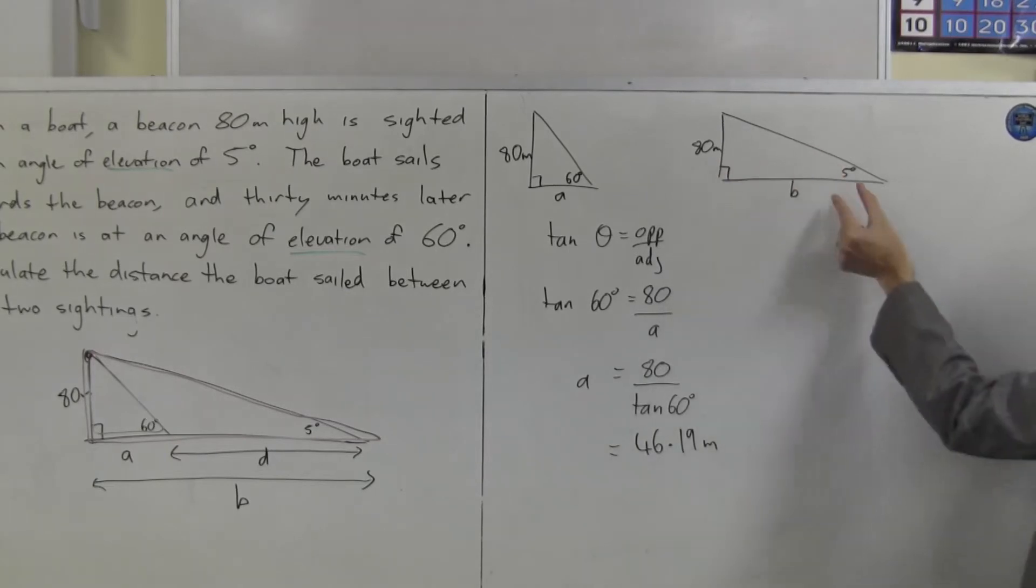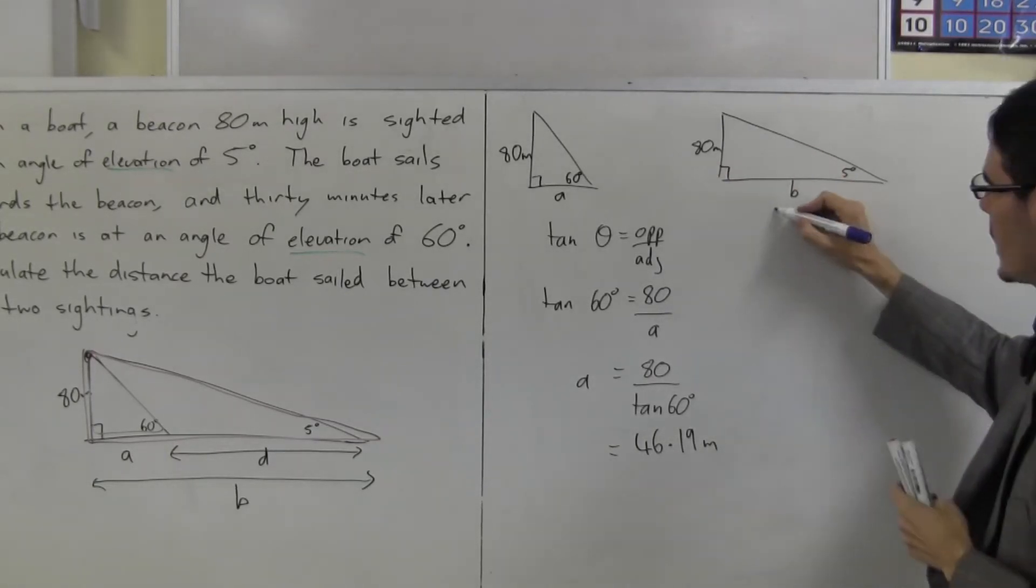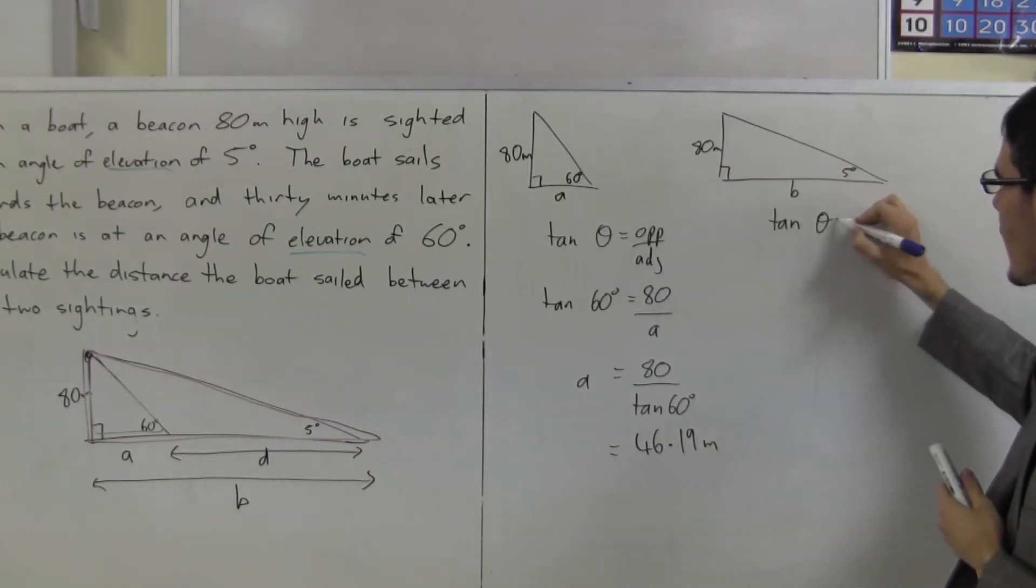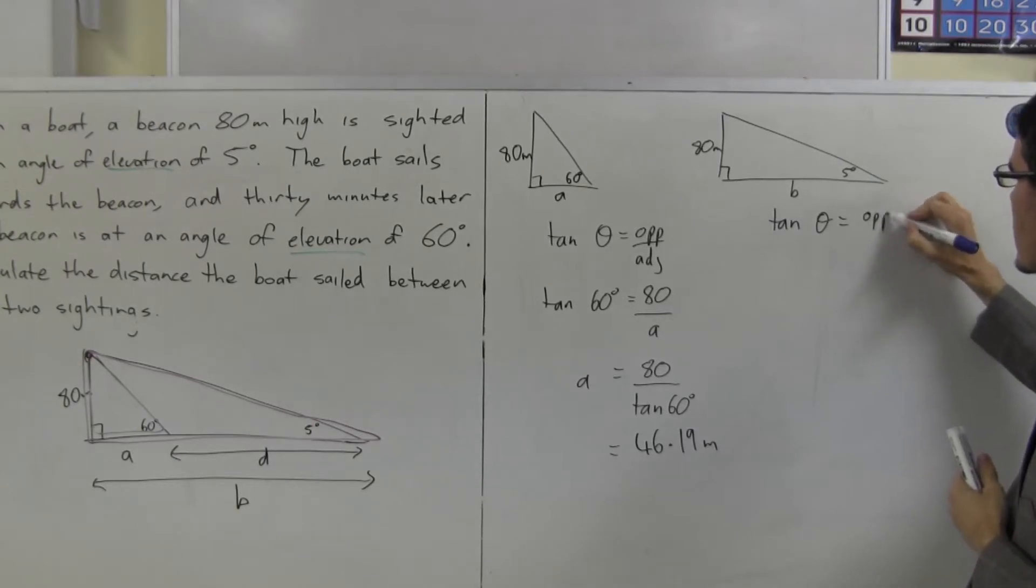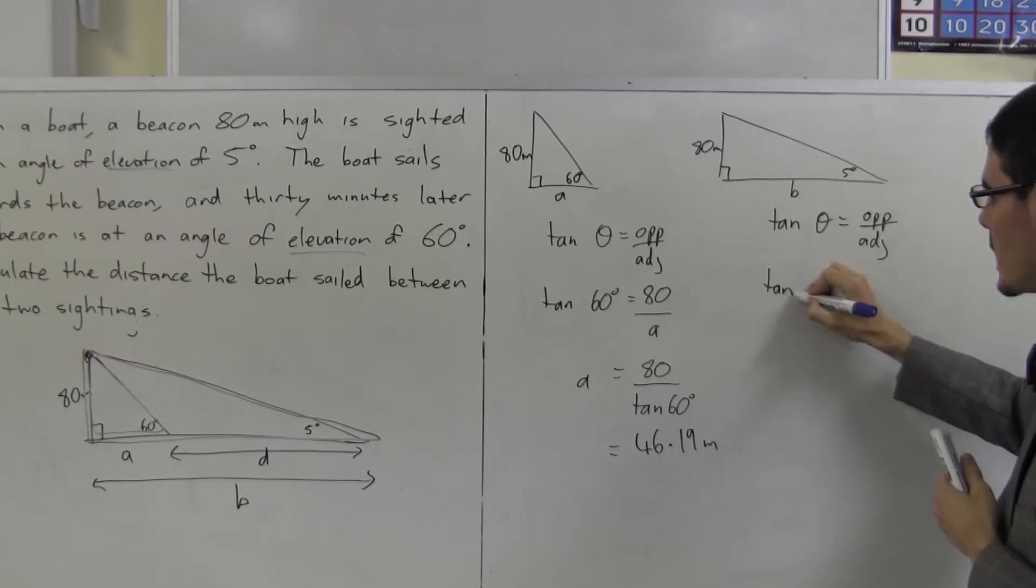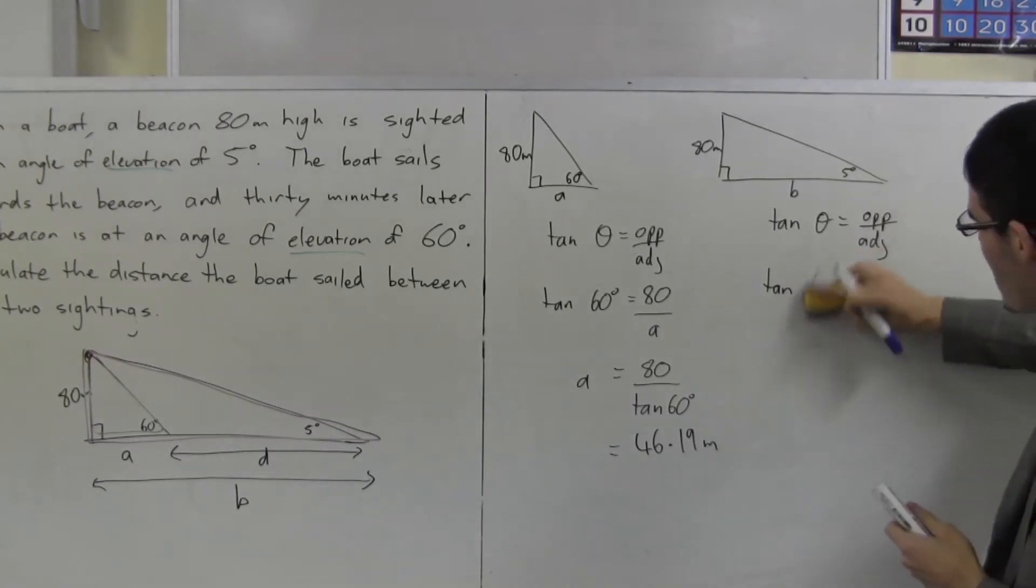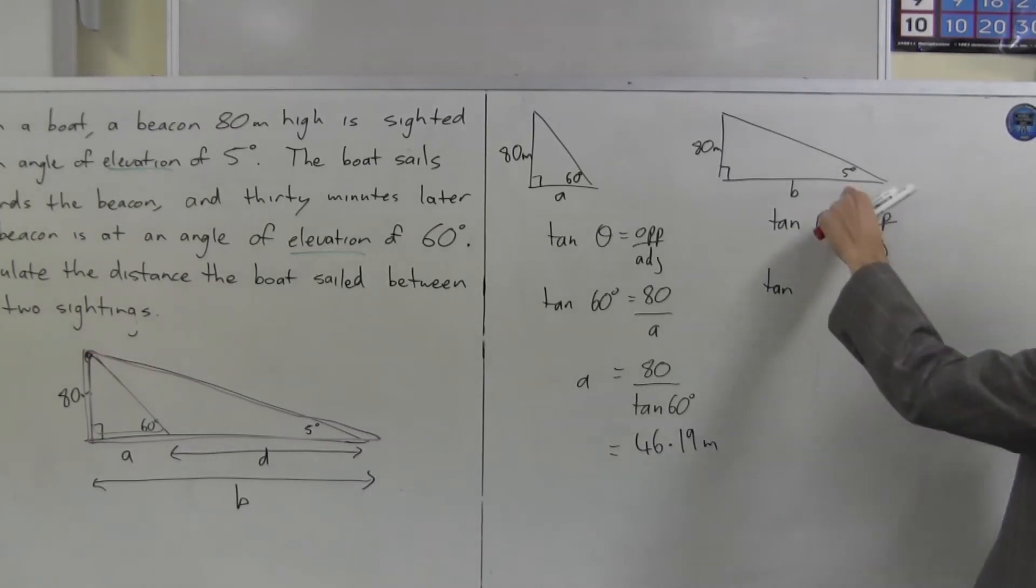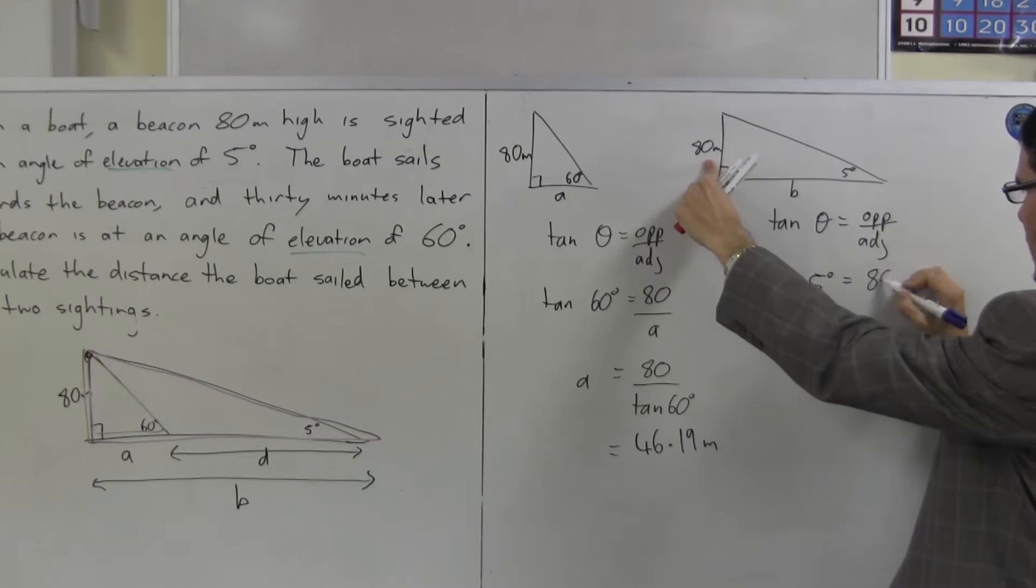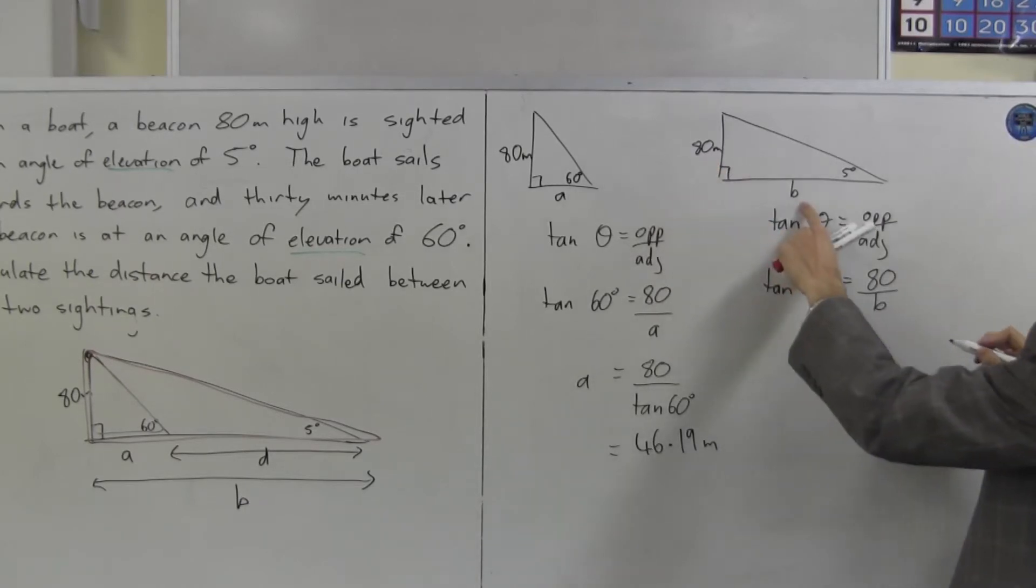Opposite. Adjacent. Tan. Tan of my angle is opposite on adjacent. Tan, 6, no. 5 degrees. Look at the little diagram. Tan of 5 degrees now is going to be 80 on B, the adjacent.